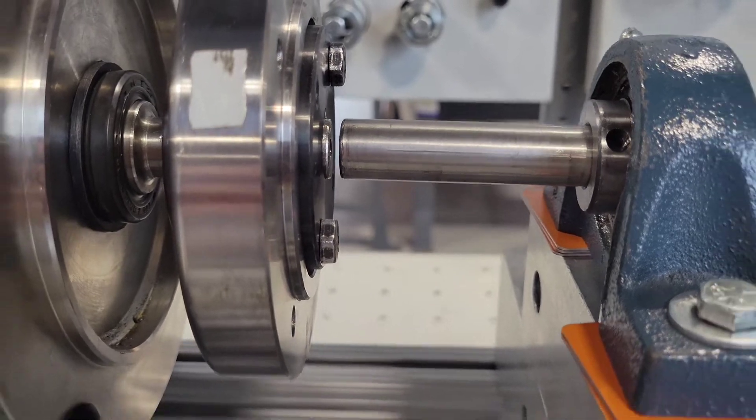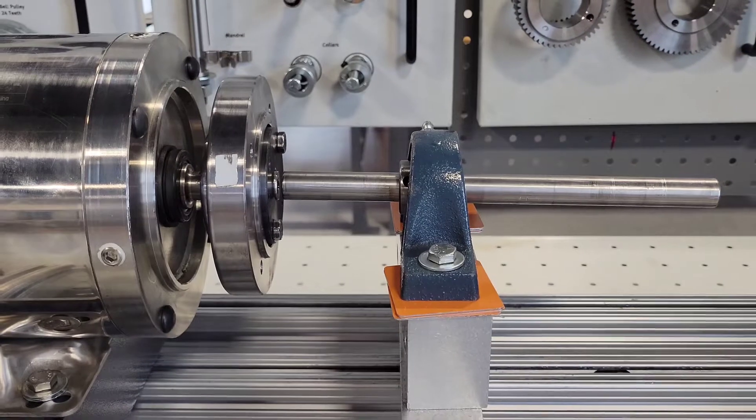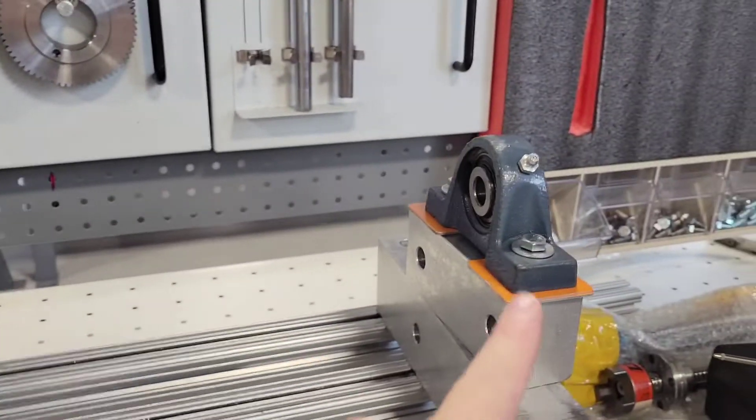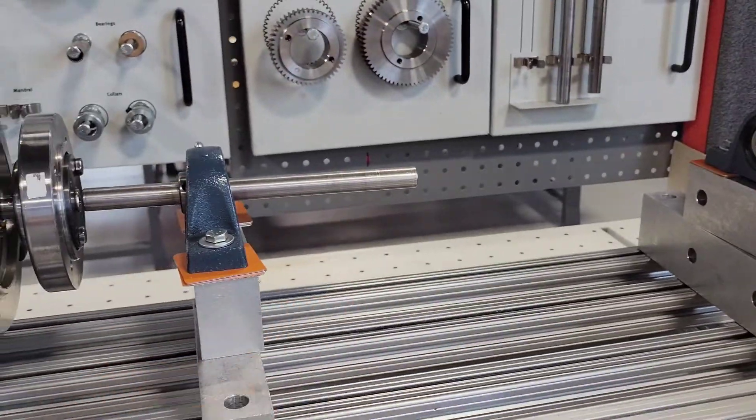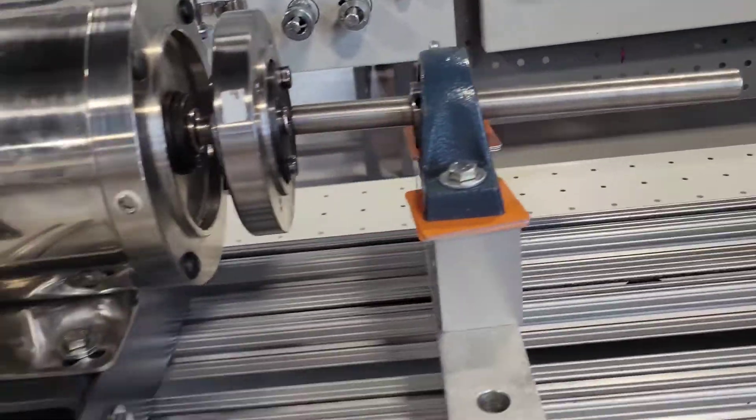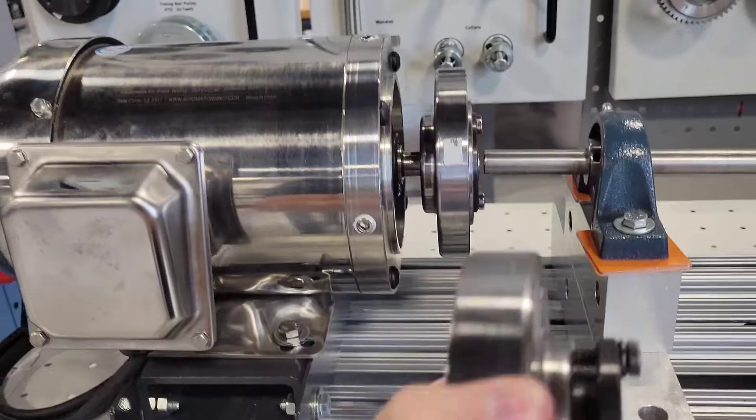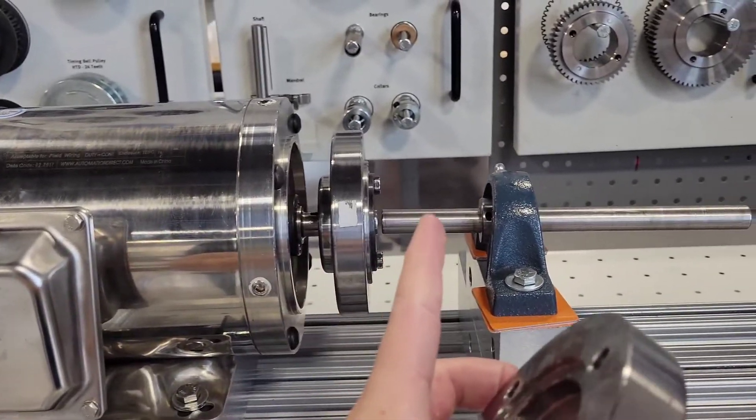We are going to get the other coupling and take the shaft and put it into the second pillow block bearing and make sure that everything is all lined up. And once it's all lined up we're going to screw it together.